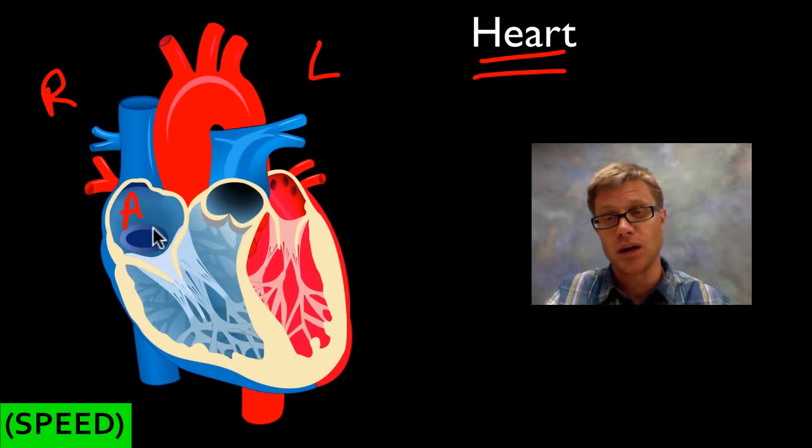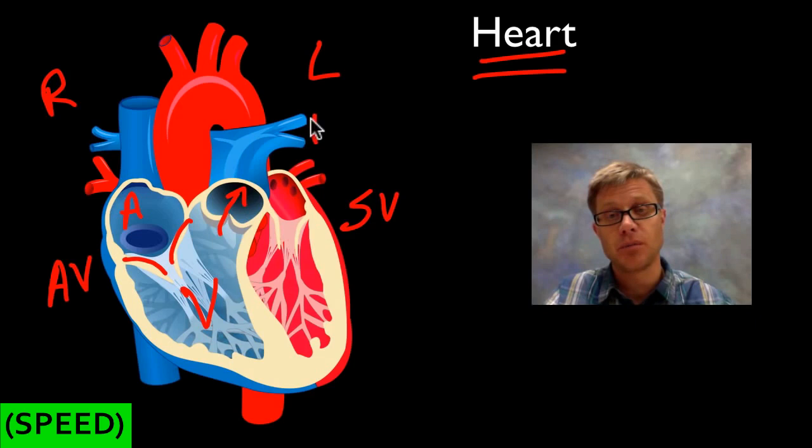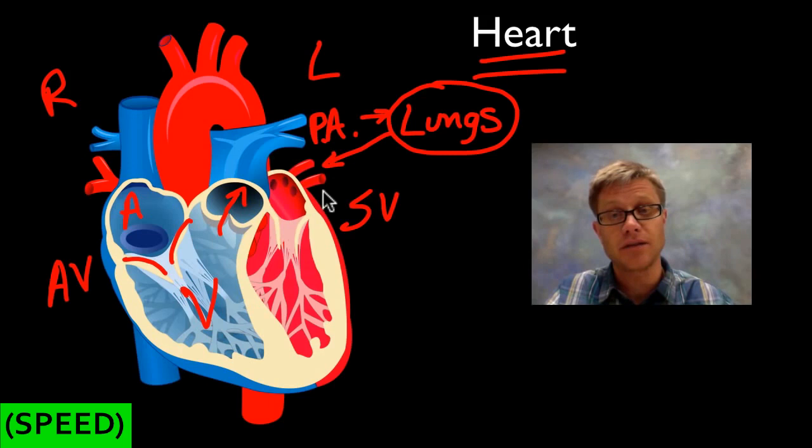From the right atrium, blood goes through the AV valve — sometimes called the tricuspid valve — down into the right ventricle. It then moves out through the semilunar valve into the pulmonary artery. The pulmonary artery is interesting because it's an artery that carries deoxygenated blood — it's headed to the lungs, moving away from the heart, where the blood becomes oxygenated.